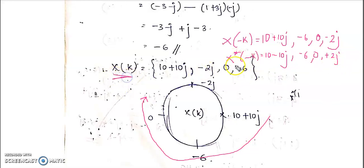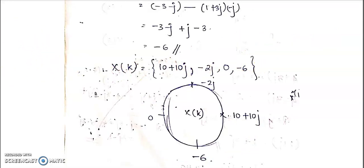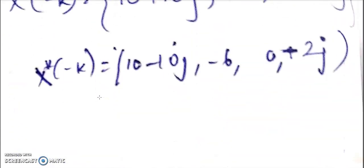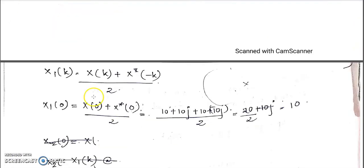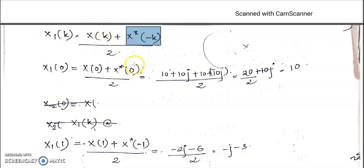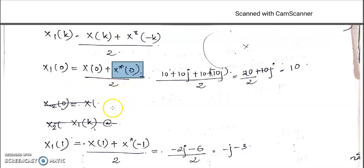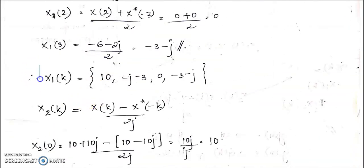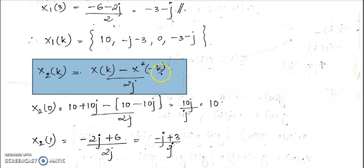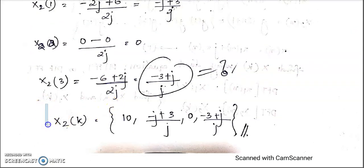You can now compute x(k) and x*(−k). Then you can easily compute the value of x1(k) and x2(k) using the equations. If you know x(k) and x*(−k), you can compute x1(k) = [x(0) + x*(0)] / 2. Just substitute the values and you will get x1(k). Then x2(k) can be computed by [x(k) − x*(−k)] / 2j. You will get the value of x2(k). Please cross-check the values.